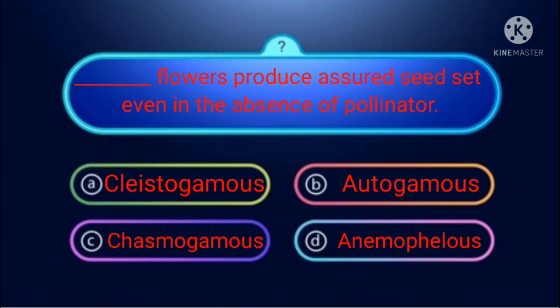Cleistogamous is the right answer because it is a closed flower — no agent is needed and no pollinator is utilized. In autogamous flowers, self-pollination occurs, but insects could potentially transfer pollen from anther to stigma. In chasmogamous flowers, the reproductive system is exposed.